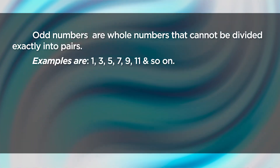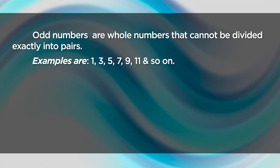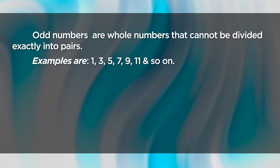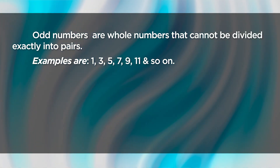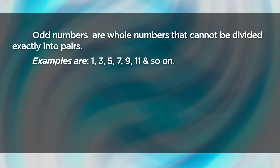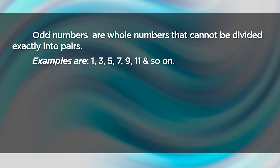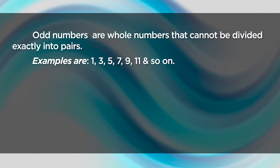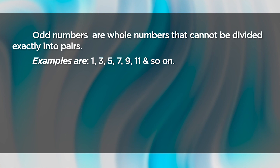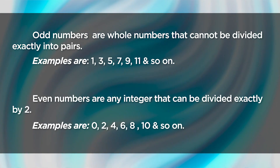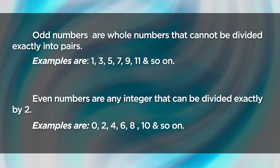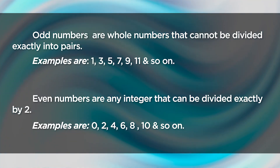Odd numbers are whole numbers that cannot be divided exactly into pairs. Examples are numbers 1, 3, 5, 7, 9, 11, and so on. While even numbers are any integer that can be divided exactly by 2.